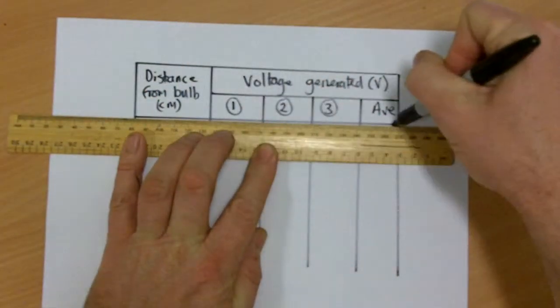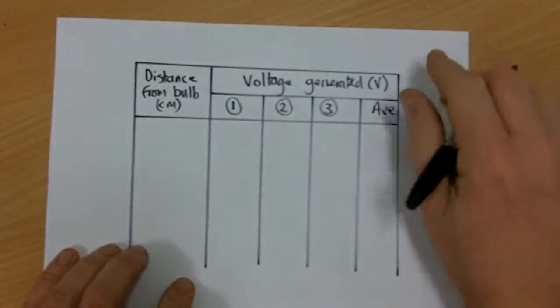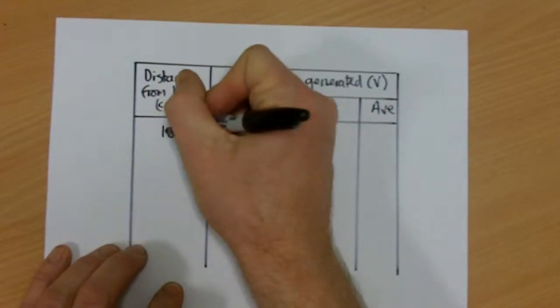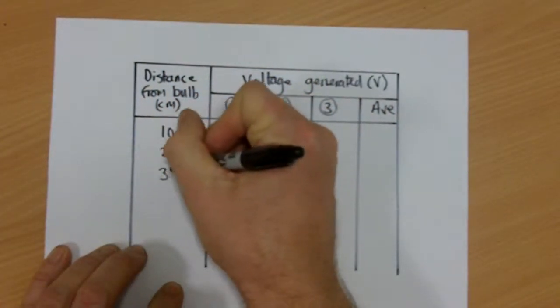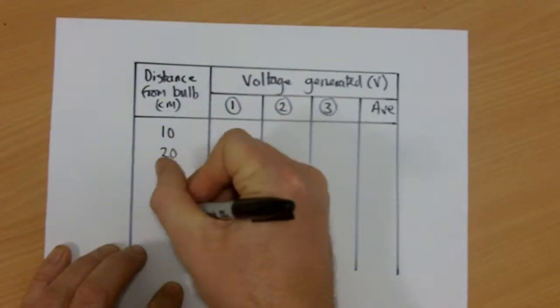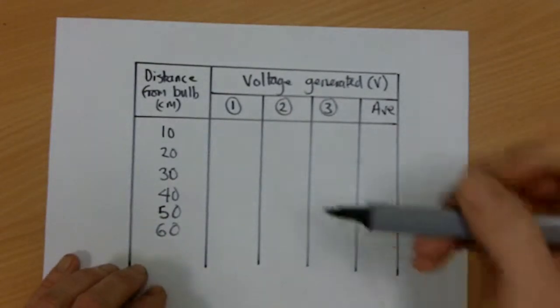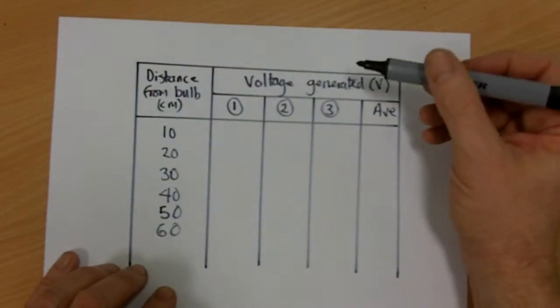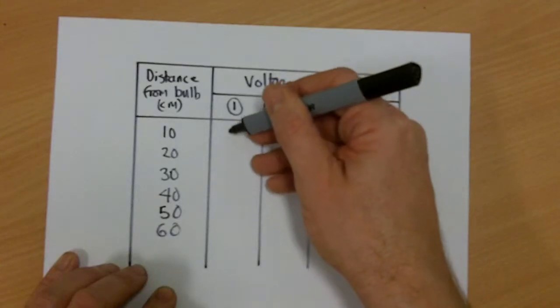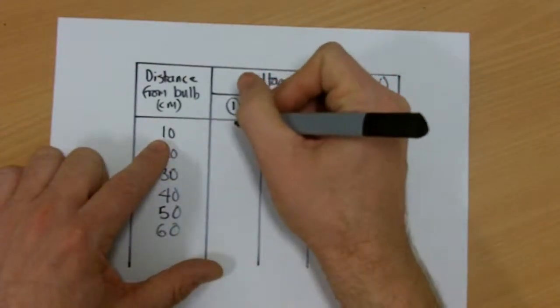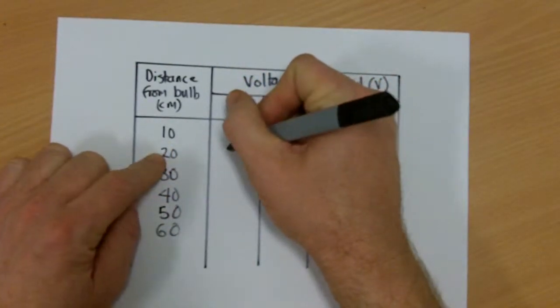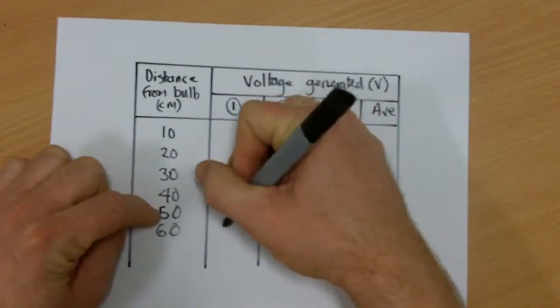And I have decided to do the following distances. I'm going to do 10, 20, 30, 40, 50, and 60 centimeters. Now, when I take my three results, it's often best to work my way down this way. So do one result at 10 centimeters. Then my result at 20, then 30, then 40, then 50, then 60.